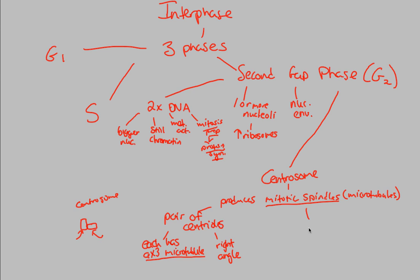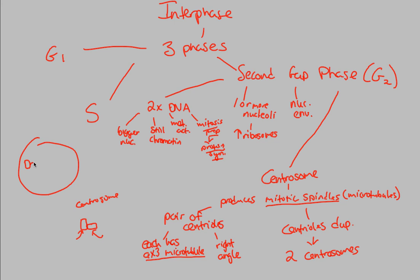During the second gap phase, the centrioles themselves actually duplicate. Why? Because we need to create two separate centrosomes. When the cell divides, we need one centrosome here producing mitotic spindles to connect to chromosomes on one side, and another centrosome producing spindles on the other side, so that chromosomes on each side can be pulled apart to their separate poles. Usually a cell has one centrosome, but it duplicates during the second gap phase because we're truly preparing for mitosis — preparing for the splitting of the genetic material.